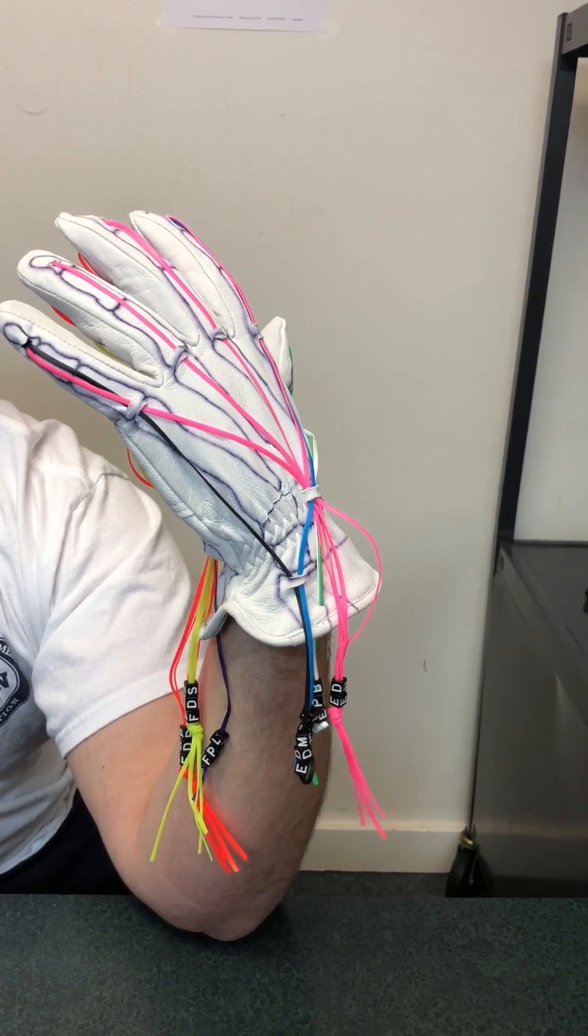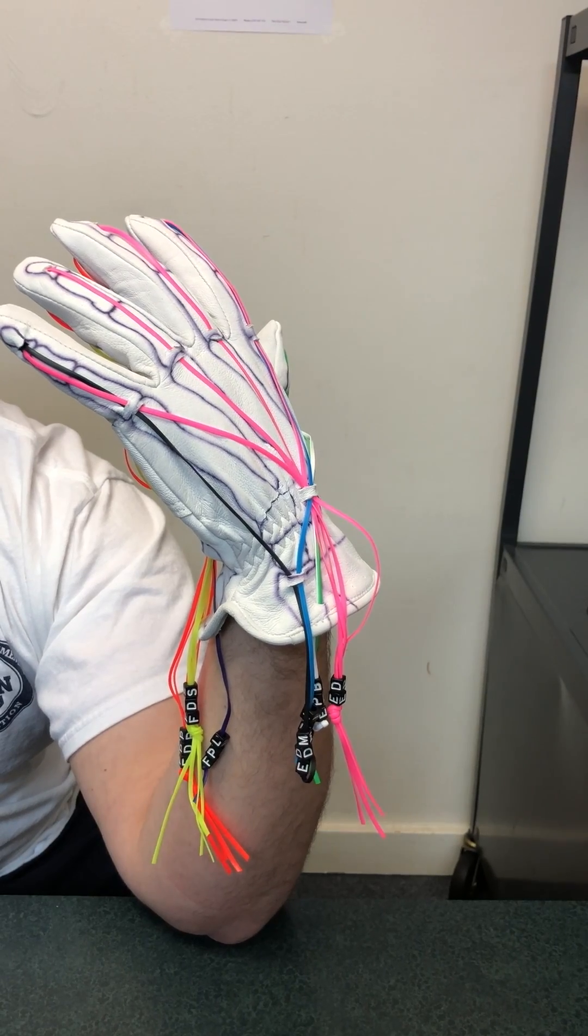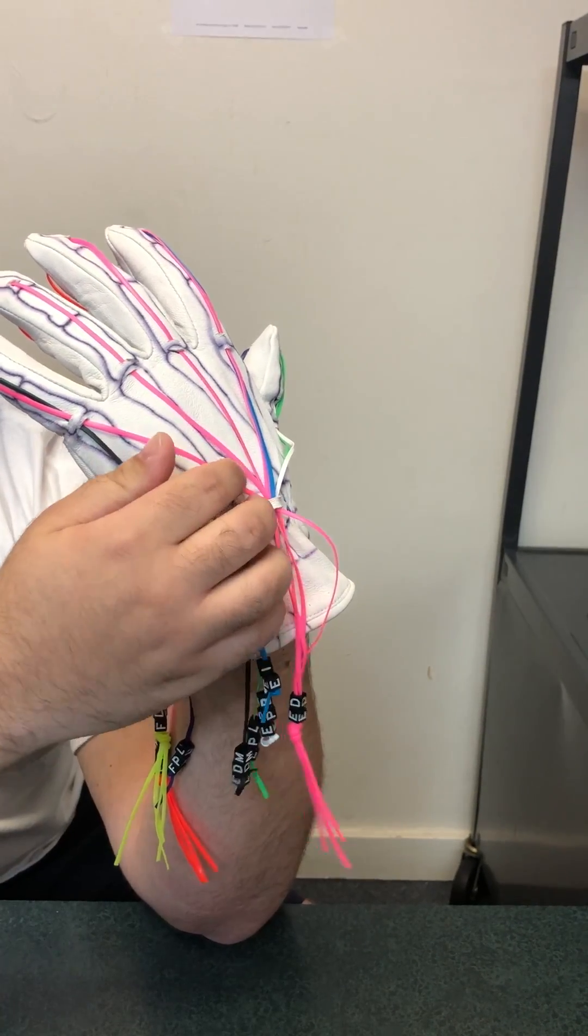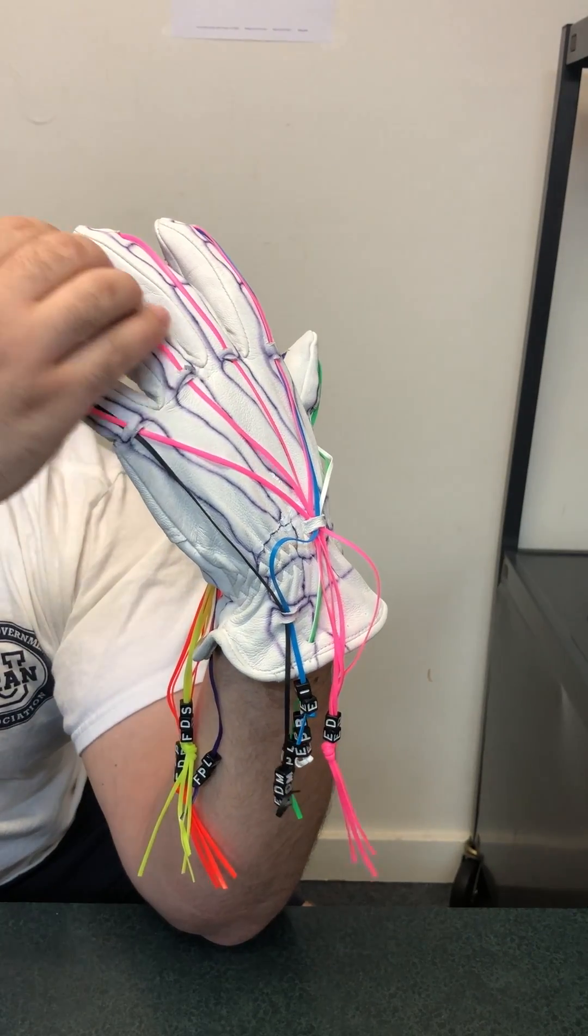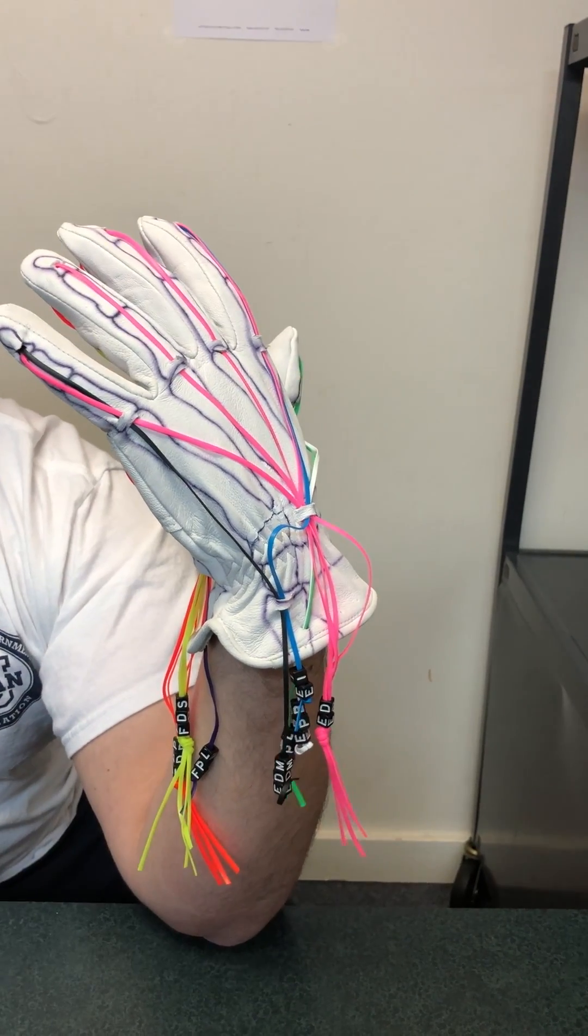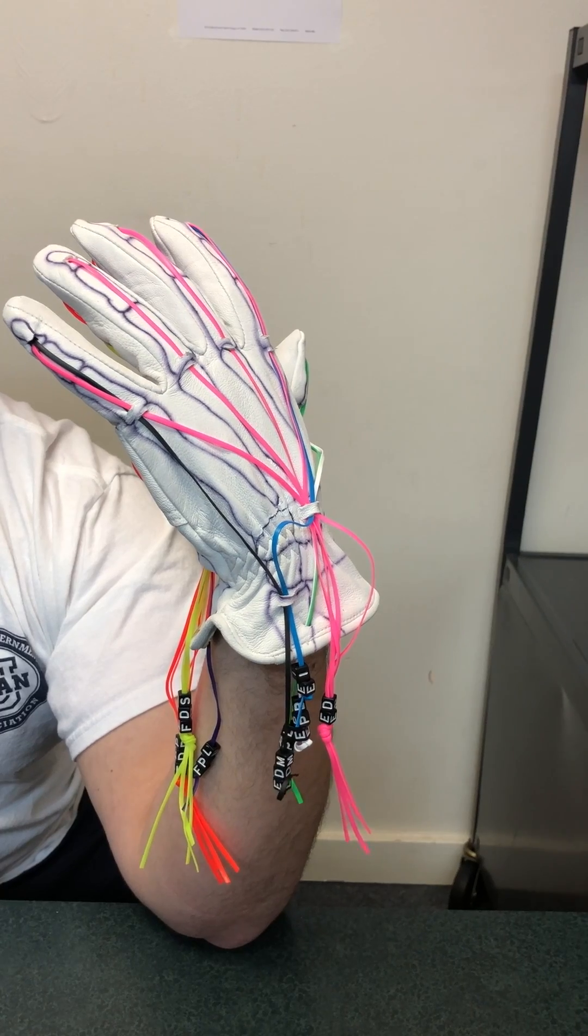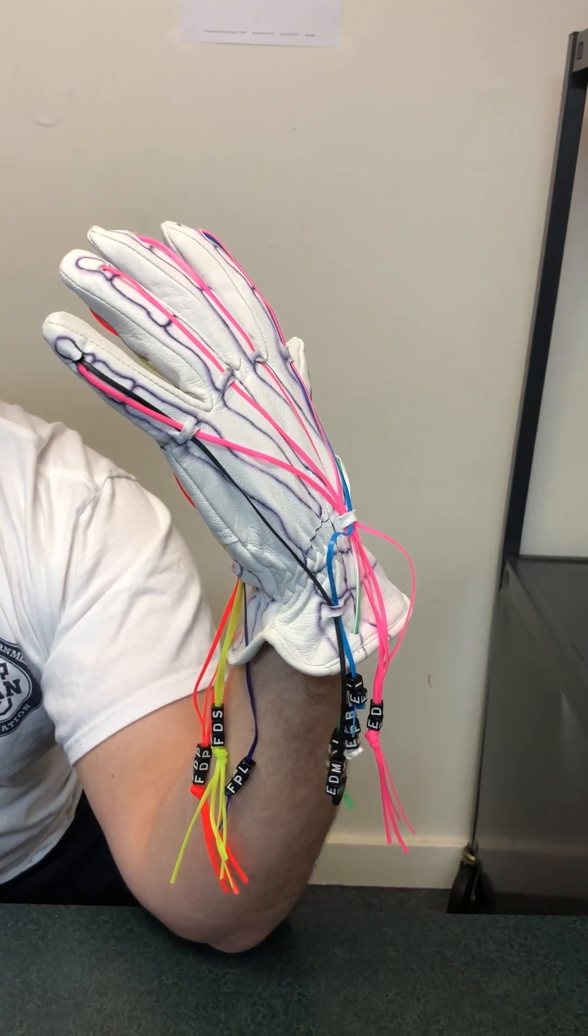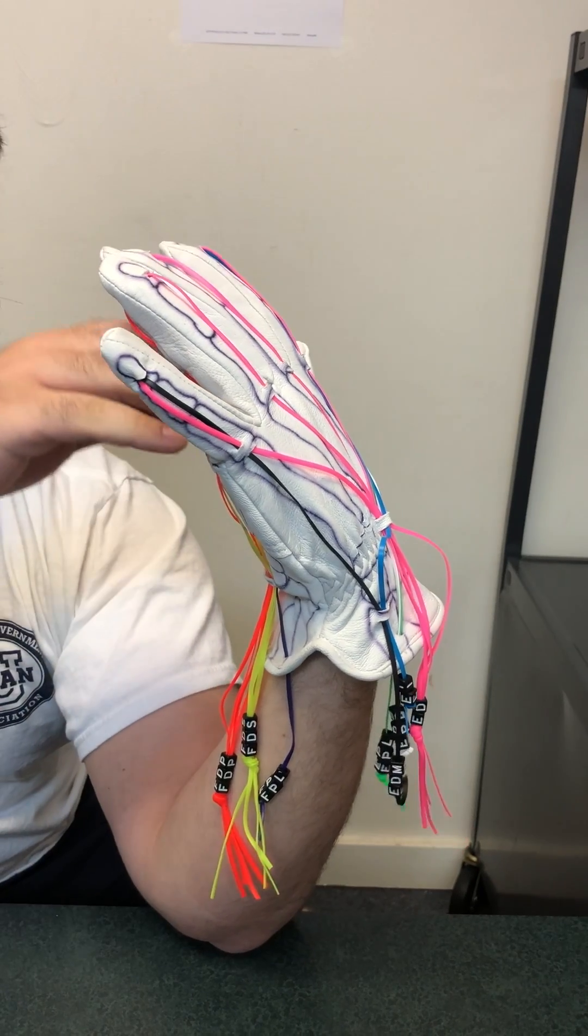First I will start by getting into a long-short scenario by having my finger extensors lengthened over my wrist joint while my finger extensors are also shortened over my fingers. My finger flexors will be shortened over my wrist joint as you can see here while also lengthened over my fingers.